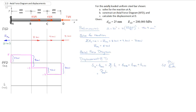We'll start with the section between A and B. So we have P, L, E, A for A-B, then between B and C, and finally between C and D. Then we can go ahead and fill in our variables.